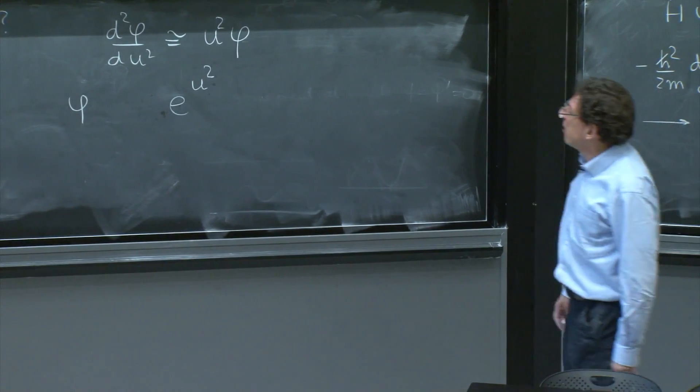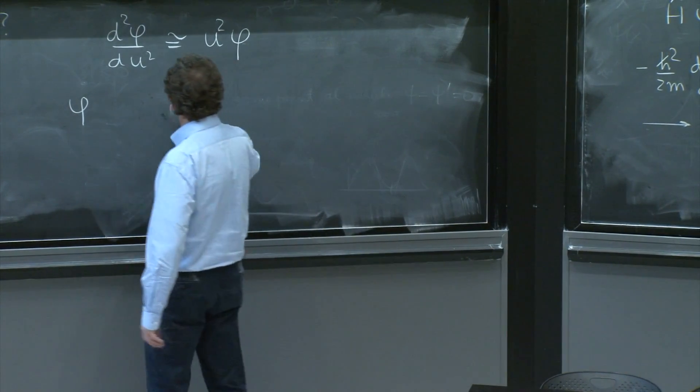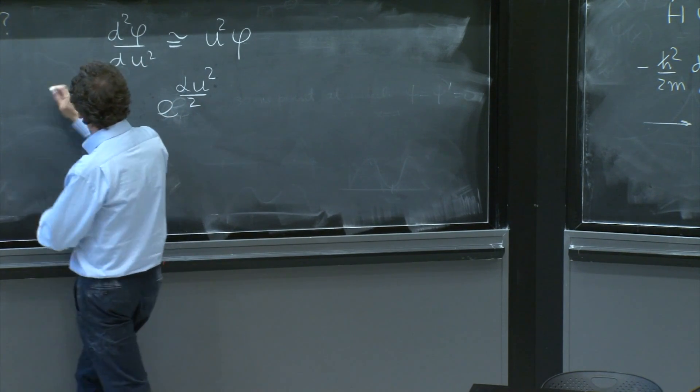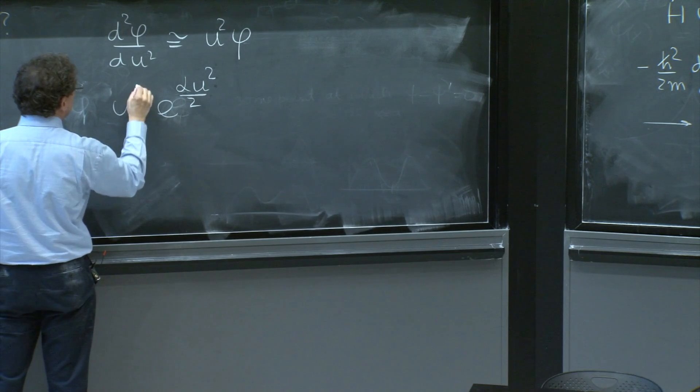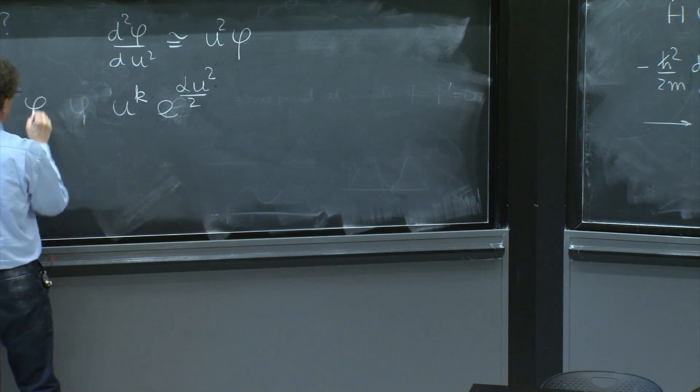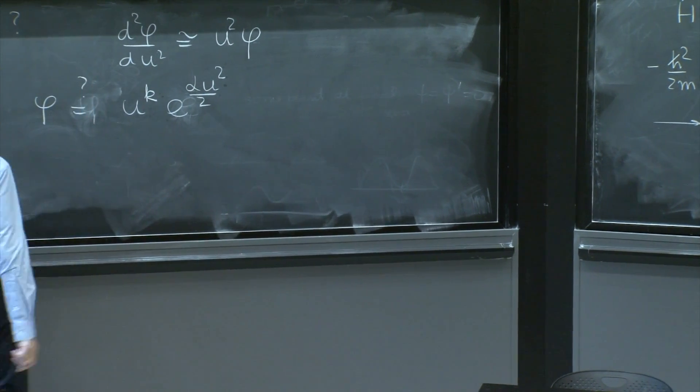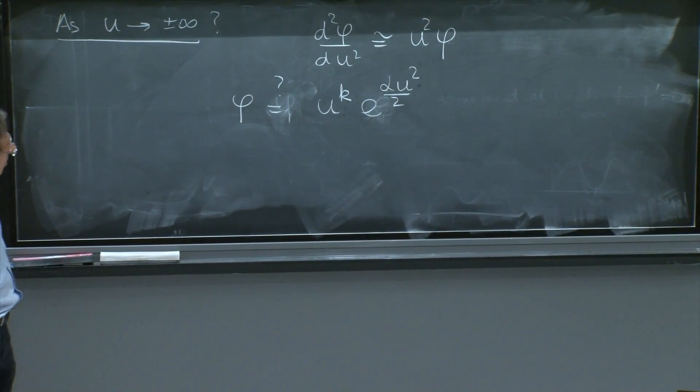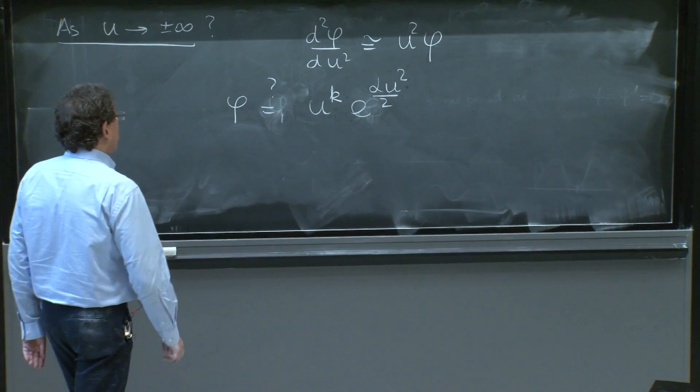So I'll put here, for example, e to the alpha over 2. And I'll even put here a u to the k. Can this work? A u to the k times alpha u squared.